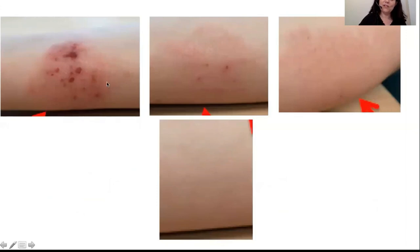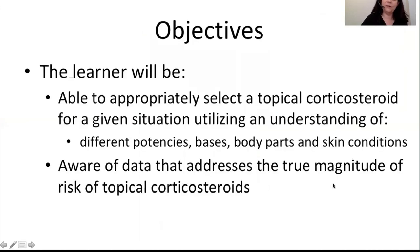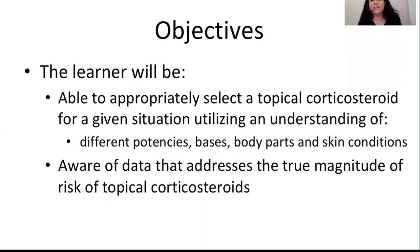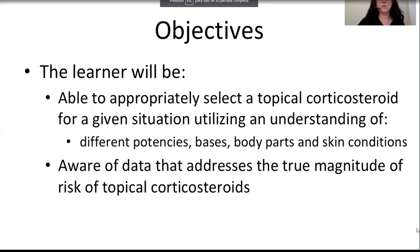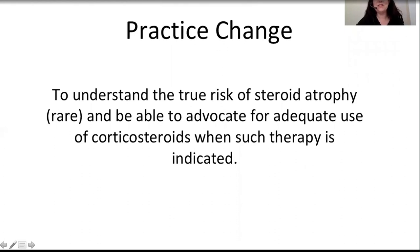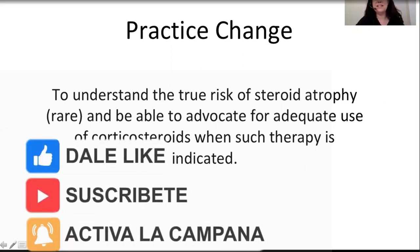That brings us to the end of today's lecture. I hope you've been able to gain skills in appropriately selecting topical corticosteroid therapy for a given situation, using the different potencies and bases and body parts. By now I hope you'll be able to understand the true risk of steroid atrophy — which is rare — and be able to advocate for adequate use of topical corticosteroids when such therapy is indicated. Thank you.